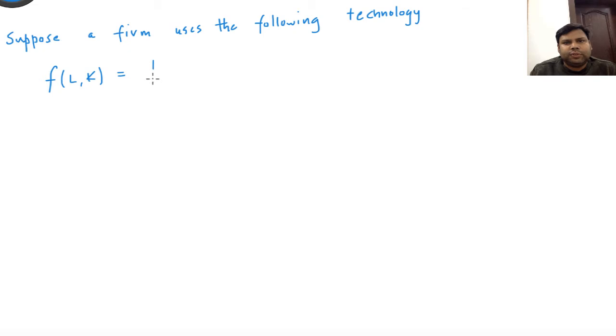F(L,K) equals square root of minimum of L,K, and we want to solve for the firm's supply function.